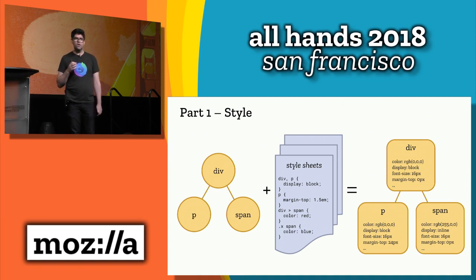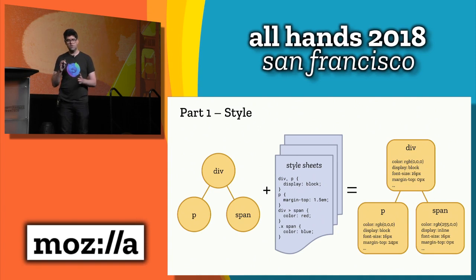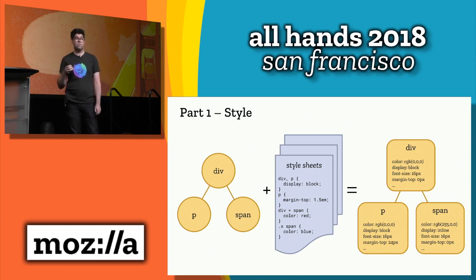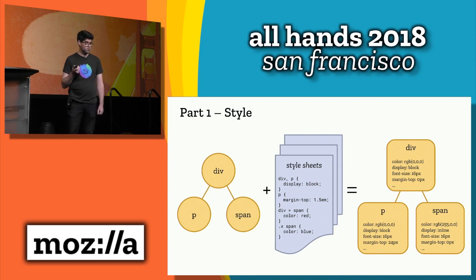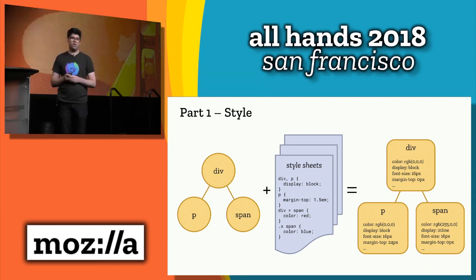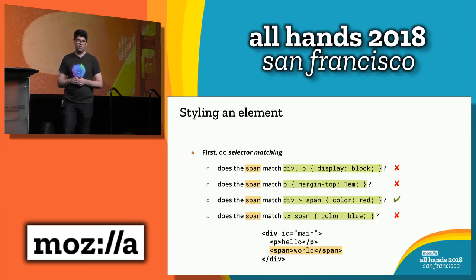Firefox supports around 200-and-something properties — almost 300, I think — so it's actually a fair amount of work. It does this by combining the DOM structure with the stylesheets that are in the document. Those stylesheets might be built-in user agent stylesheets, which have rules like divs being display block, plus the stylesheets the author has added. In the end, we've got assigned values for every property for every element.